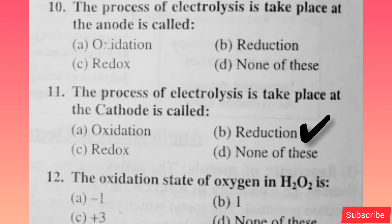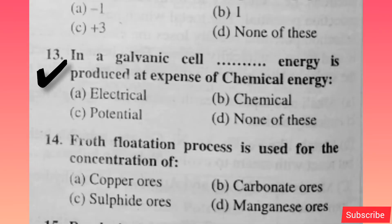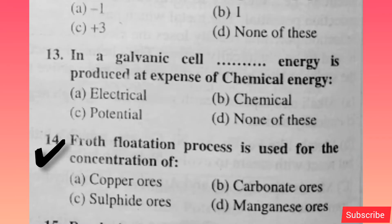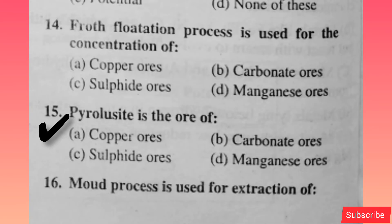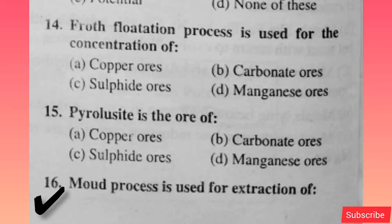The process of electrolysis that takes place at the cathode is called — option B is right. The oxidation state of oxygen in H2O2 is — option A is right. In a galvanic cell, energy is produced at the expense of chemical energy — option A is right. Froth flotation process is used for the concentration of — option C is right.